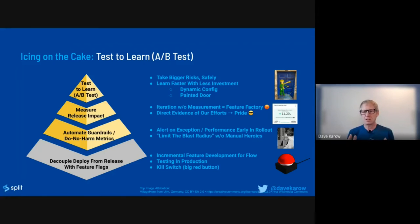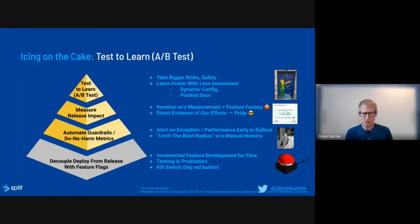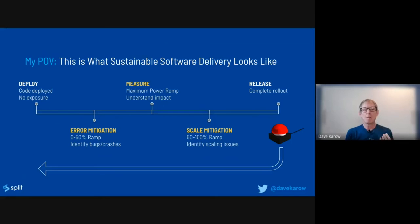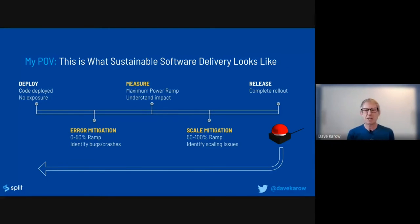This pyramid shows why we do progressive delivery, and it can go up to higher value reasons as you rise through it. You absolutely start by decoupling deploy from release, then immediately work on automating your guardrails and do-no-harm metrics. From there, you build in measuring impact. This is what sustainable software delivery looks like — push stuff out, have an easy way to make sure you haven't missed anything in production, don't hurt your users when something goes wrong, know the impact of your code, avoid ugly surprises during peak periods, and if needed, stop it with the push of a button.